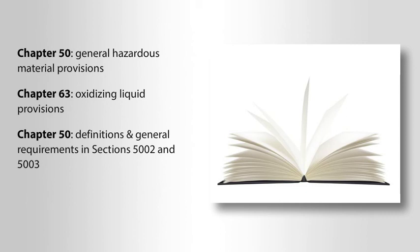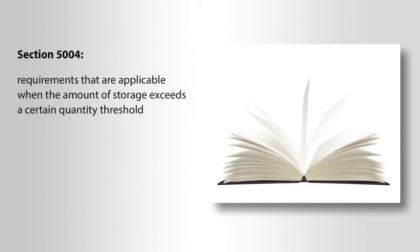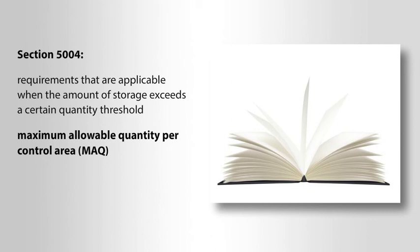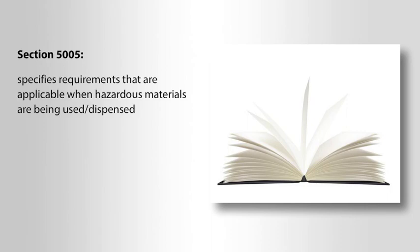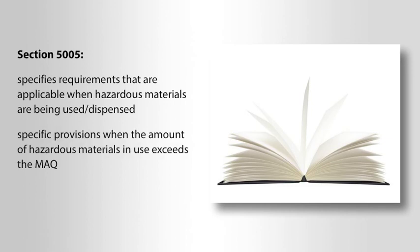Chapter 50 covers the general hazardous material provisions and chapter 63 covers the oxidizing liquid provisions. Chapter 50 contains definitions and general requirements in sections 5002 and 5003 that are applicable regardless of the quantity of hazardous materials in storage or use. Section 5004 contains requirements applicable when the amount of storage exceeds a certain quantity threshold known as a maximum allowable quantity per control area, or MAQ. Section 5005 specifies requirements applicable when the hazardous materials are being used or dispensed, and sets forth specific provisions when the amount in use exceeds the MAQ.